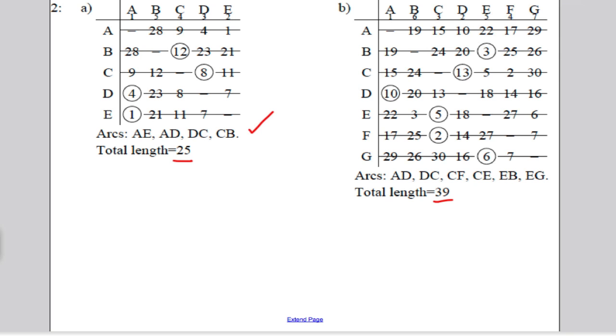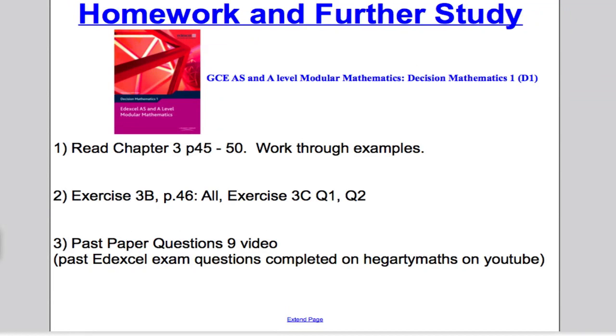Finally, for further work and homework, read chapter 3, page 45 to 50 in your Decision 1 book and work through those examples. There's a good example in there on Prim's with a matrix, but on a network. Do exercise 3B, page 46, all the questions, and then move on to exercise 3C, page 50, questions 1 and 2. Last thing, do the past paper, questions 9 video, where I go through the Edexcel exam questions that have come up on Prim's algorithm. Thank you for watching the video. I hope you found it useful in your study of Decision 1.